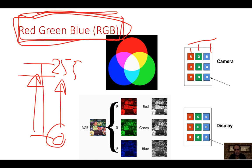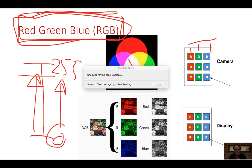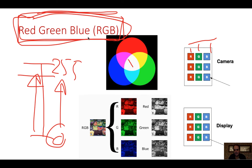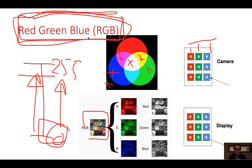If we take red, green, and blue at full intensity, we make white. If we have zero values of red, green, and blue, we get black. If we mix red and green together, we get yellow. If we mix red and blue together, we get cyan. So the images we have are really a merger of the different colors all put together.